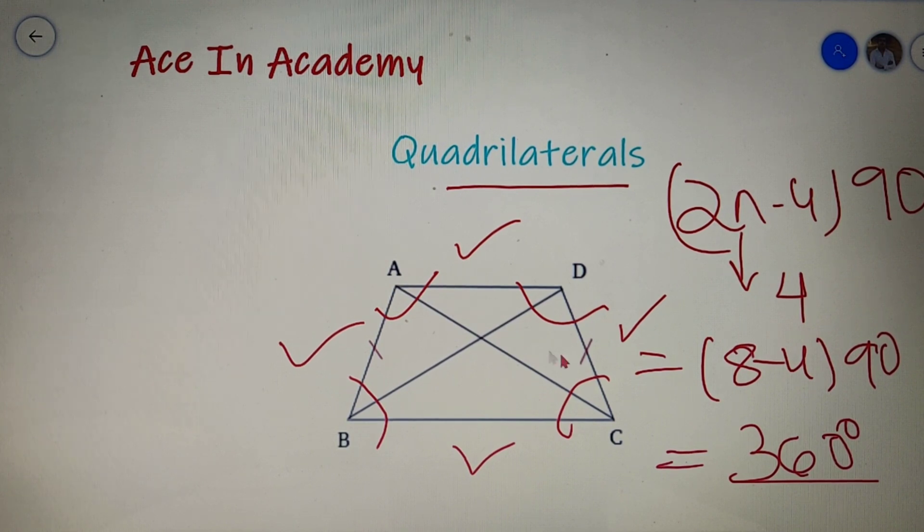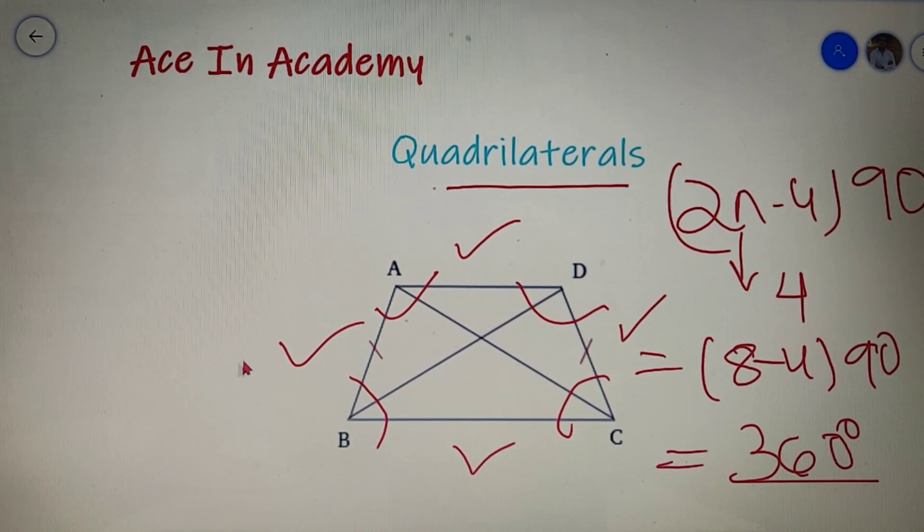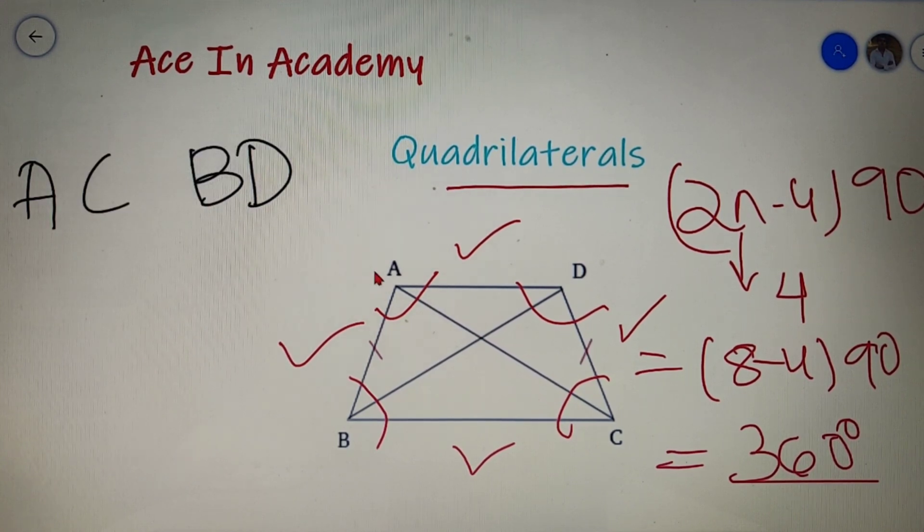Diagonals are basically straight lines which join the opposite vertices in a polygon. So over here we have two diagonals that are AC and BD. Now these are the only two diagonals that are possible for a quadrilateral.